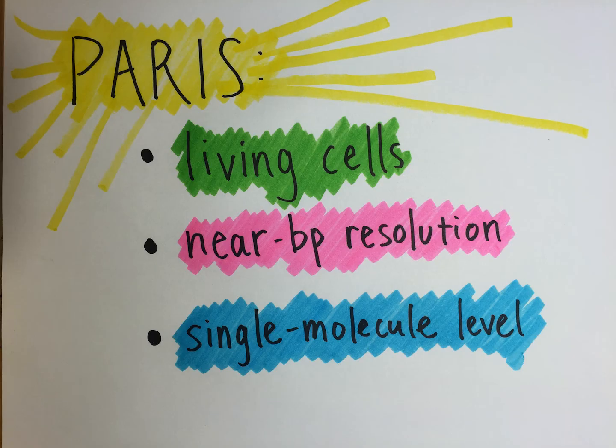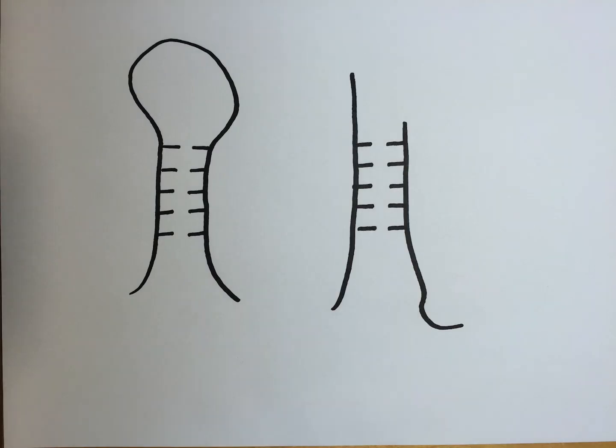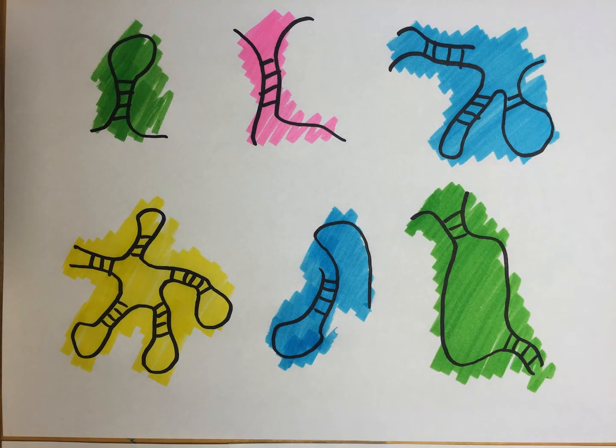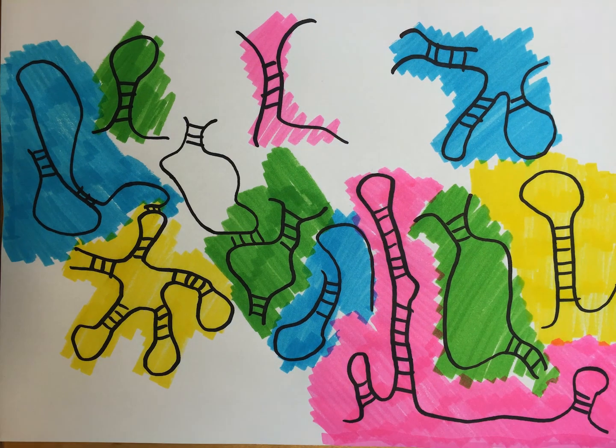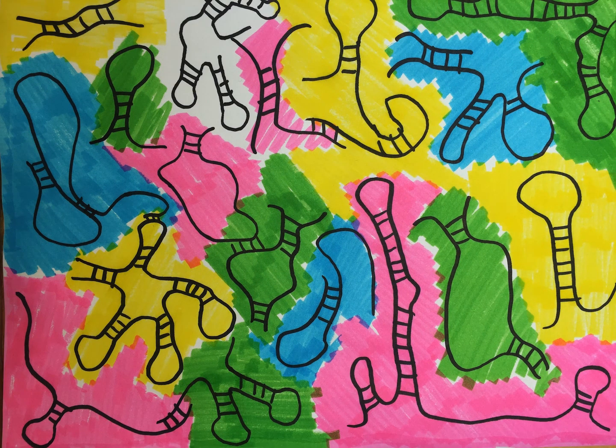In summary, PARIS is a method for direct analysis of RNA base pairing, which underlies both RNA structures and RNA-RNA interactions. Our method determines base pairing with high resolution on a single molecule level, providing a global view of the RNA structurome and interactome.